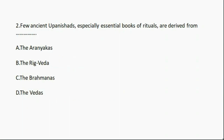Question number two: A few ancient Upanishads, especially essential books of rituals, are derived from which of the following? Option A: the Aranyakas. Option B: the Rig Veda. Option C: the Brahmanas. Option D: the Vedas. And the correct answer is option C, the Brahmanas.